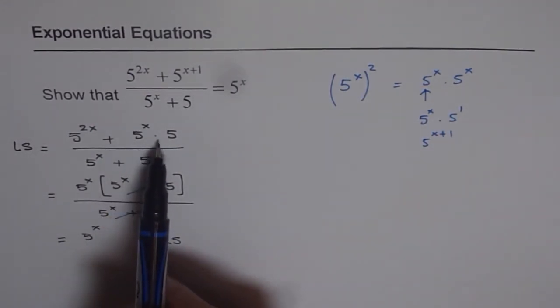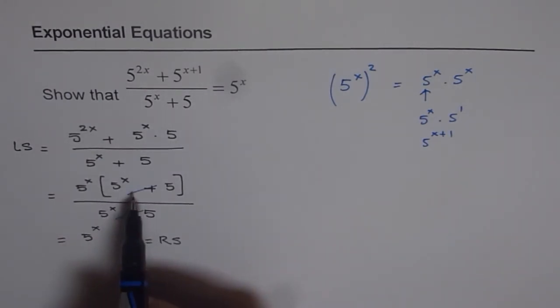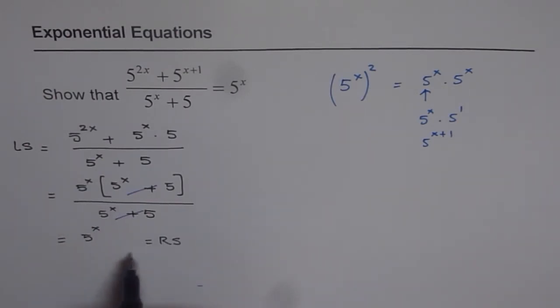That is how I wrote this one. Now you can factor 5 to the power of x and see for yourself that one of the factors cancels out. So you are left with 5 to the power of x. That is how you can show that the left side is equal to right side.